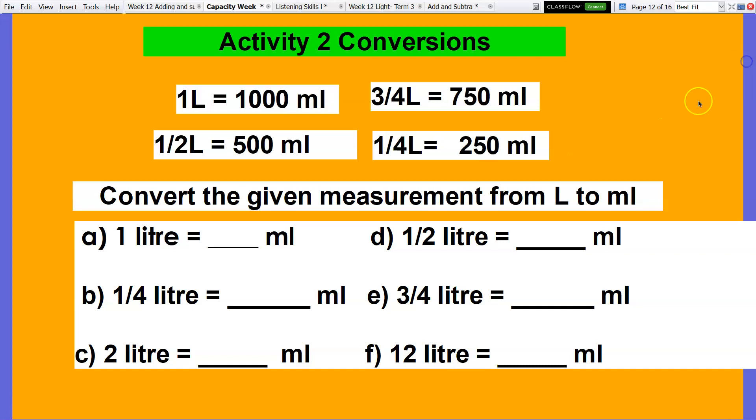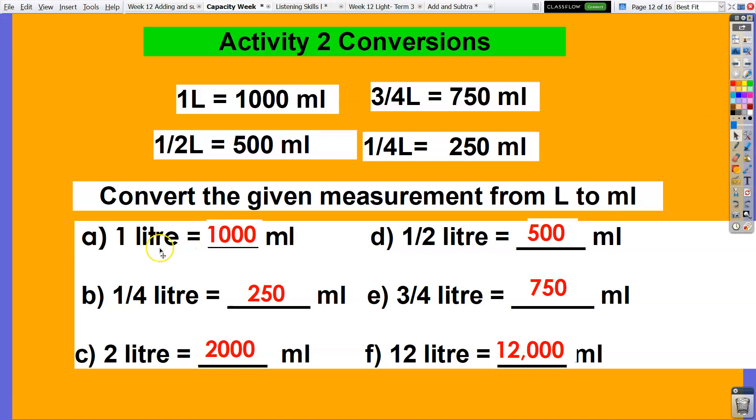Time is up. Here are the answers: one liter is equal to 1000 ml, one-fourth liter is equal to 250 ml, two liters is equal to 2000 ml, one-half liter is equal to 500, three-fourth liter is equal to 750 ml, and finally 12 liters is equal to 12,000 ml.